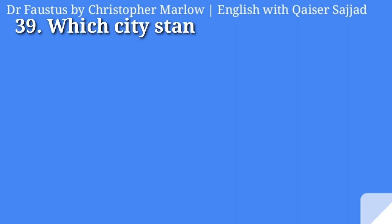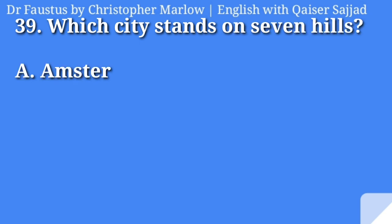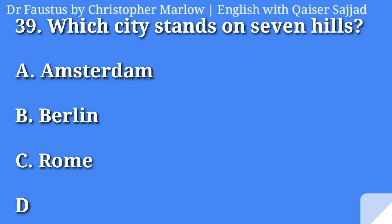Which city stands on seven hills? Amsterdam, Berlin, Rome, or Jerusalem? Answer is option C, Rome.